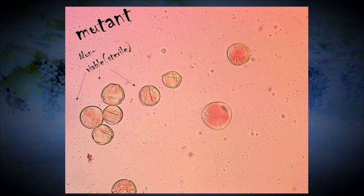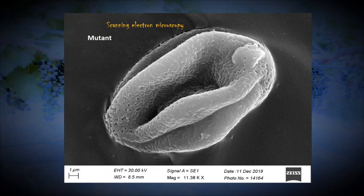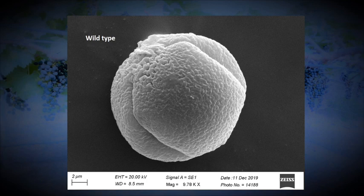In scanning electron microscopy, we observed that the morphology of the pollen grain of the mutant was abnormal, whereas the morphology of the wild type was normal and it was pericolpate-tricolpate in shape.